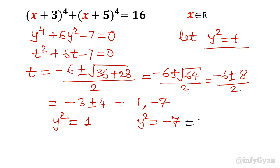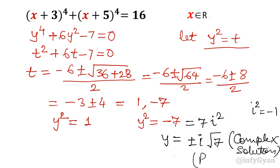y^2 = -7, so I can write 7i^2 (iota i^2) because we know that i^2 is -1. If I take square root both sides here then it will come out ±i√7 which is invalid because we are solving for real solution, so we will reject the complex solution. y^2 = 1 so y will be ±1.